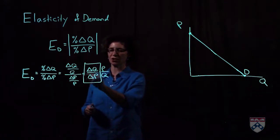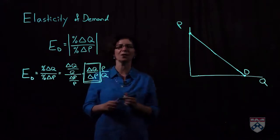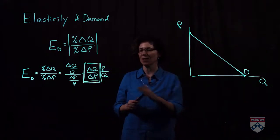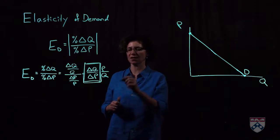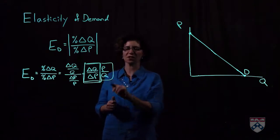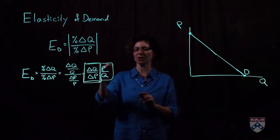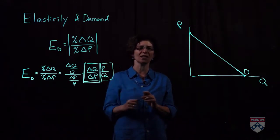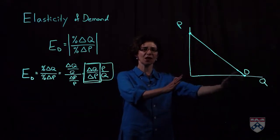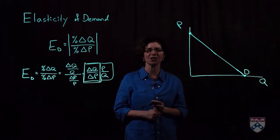Now of course this first term is the slope, or it's actually 1 over the slope. So this term is constant, but this term changes as we go down the demand curve. As we go down the demand curve, the price drops and the quantity increases. So along the demand curve, elasticity changes.